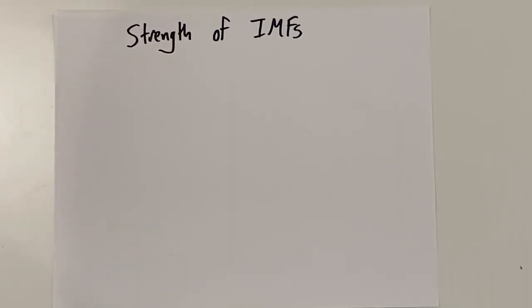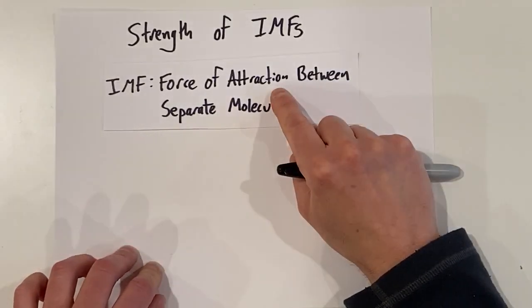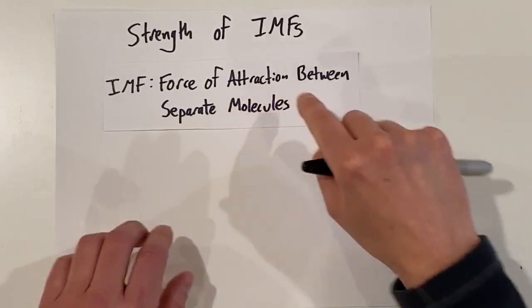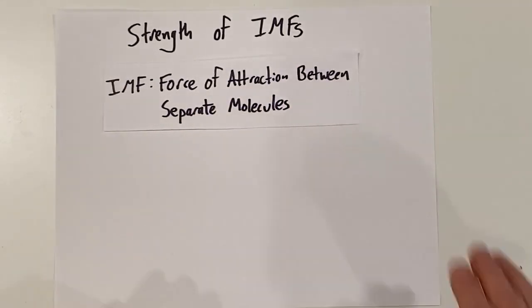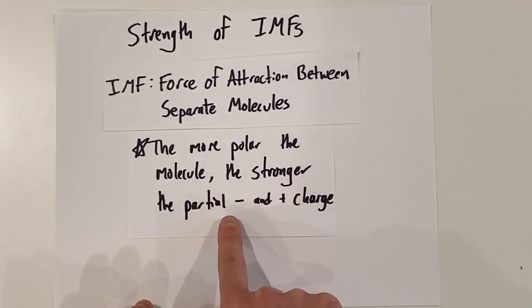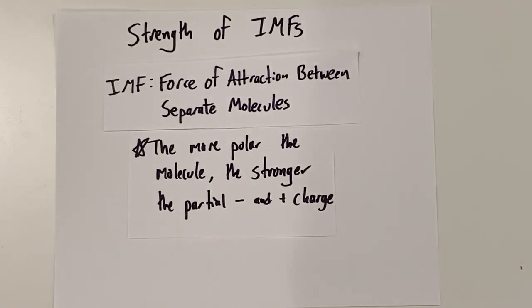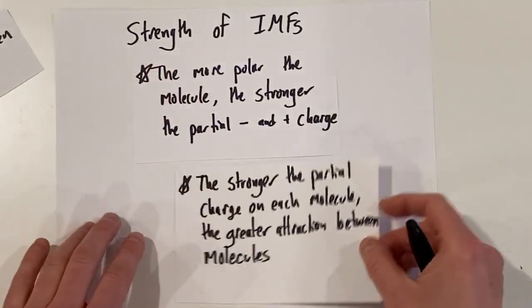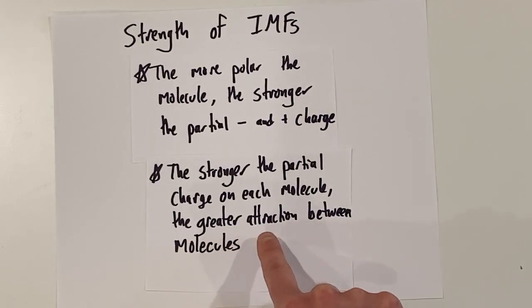In this video, we'll discuss the strength of the different intermolecular forces and explain why they are stronger or weaker than each other. Intermolecular forces are the force of attraction between separate molecules. We get attraction between partial positive and partial negative charges on separate molecules. The more polar the molecule, the stronger those charges are, and the greater the attraction between molecules — meaning the stronger the intermolecular forces.